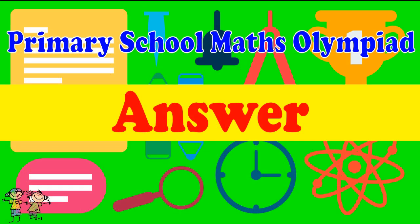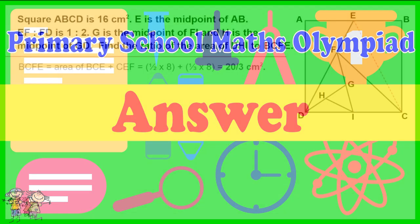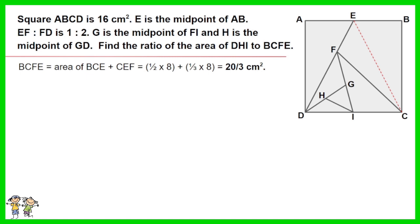Here is the recommended answer. BCFE equals area of BCE plus CEF equals half of 8 plus one third of 8 equals 20 over 3 cm squared. CDF equals 2 thirds of 8 equals 16 over 3 cm squared.